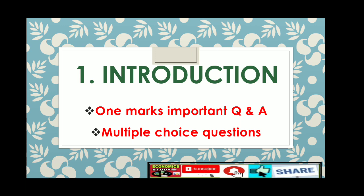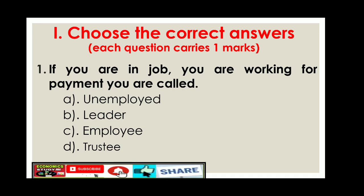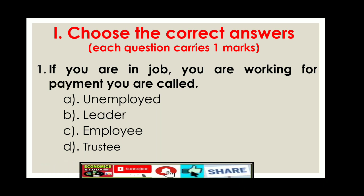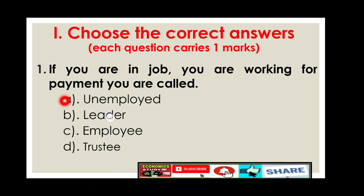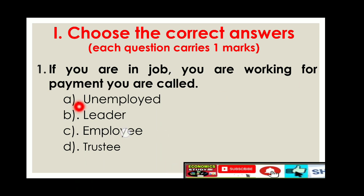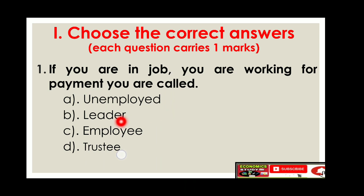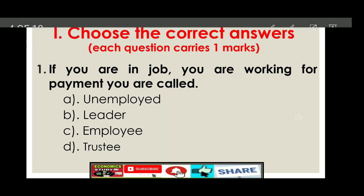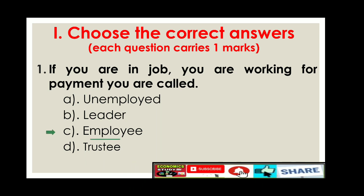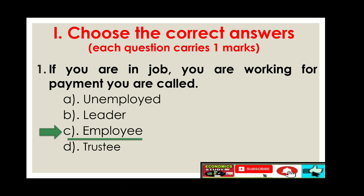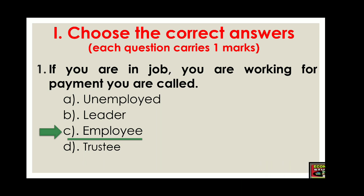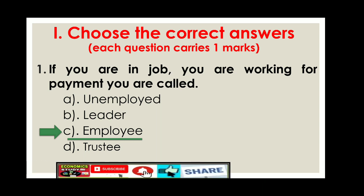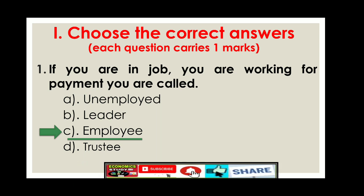First question: If you are in a job and working for payment, you are called — option A: unemployed, option B: leader, option C: employee, option D: trustee. The right answer is option C: employee. When you are in a job or working for some other person and get paid for it, you are employed by somebody who pays you wages or salaries. You are called a service holder or employee.